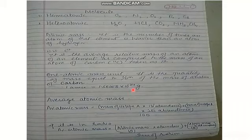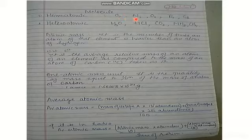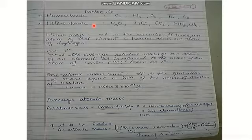Molecules are of two types. If a molecule is made up of only one type of atom — like O2 with two oxygen atoms, N2 with two nitrogen atoms, or ozone with three oxygen atoms — they are known as homoatomic molecules. If they are formed by the combination of two or more different types of atoms, they are known as heteroatomic molecules. For example, H2O contains two hydrogen atoms and one oxygen atom.